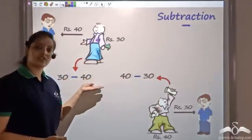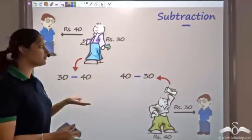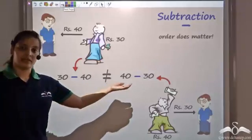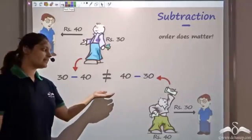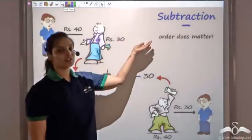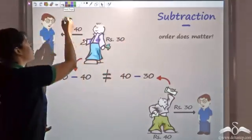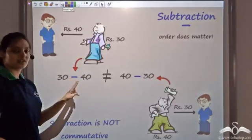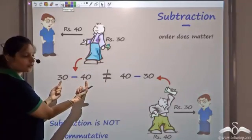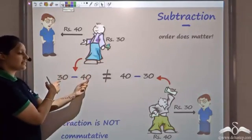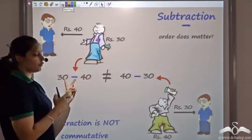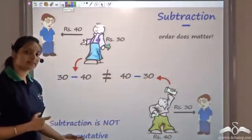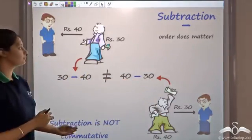Both these situations are not the same. They are not equal, and hence subtraction is not commutative because you cannot reverse the order. You cannot say that 30 minus 40 is the same as 40 minus 30 — it's not the same, and hence subtraction is not commutative.